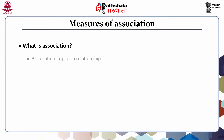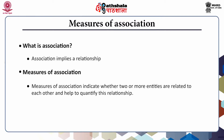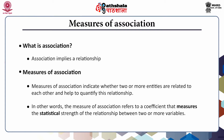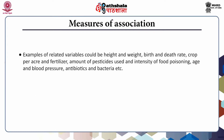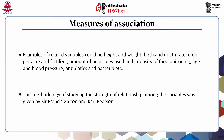What is association? As the name suggests, association implies a relationship. Measures of association indicate whether two or more entities are related to each other and help to quantify this relationship. The measure of association refers to a coefficient that measures the statistical strength of the relationship between two or more variables. Examples of related variables could be height and weight, birth and death rate, crop per acre and fertilizer, amount of pesticides used and intensity of food poisoning, age and blood pressure, antibiotics and bacteria, etc. The methodology of studying the strength of relationship among variables was given by Sir Francis Galton and Karl Pearson.